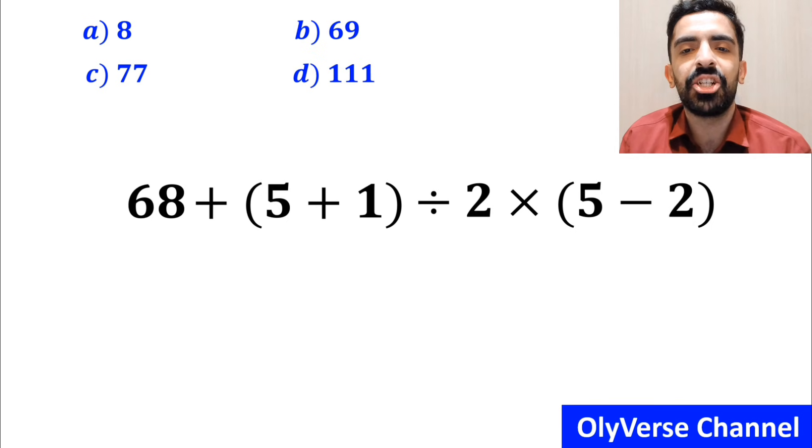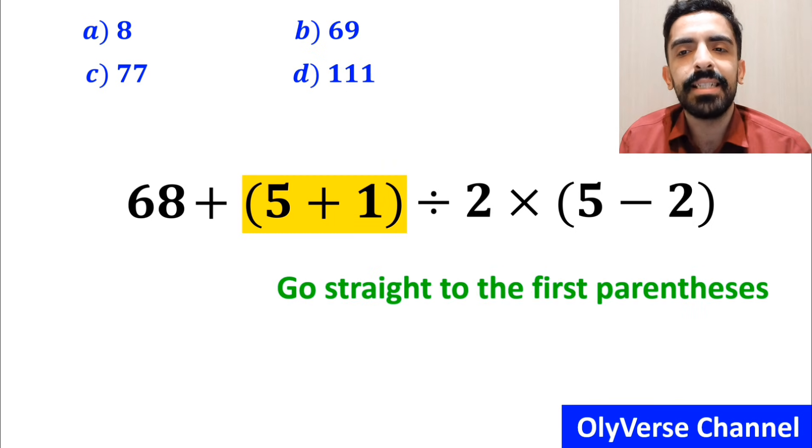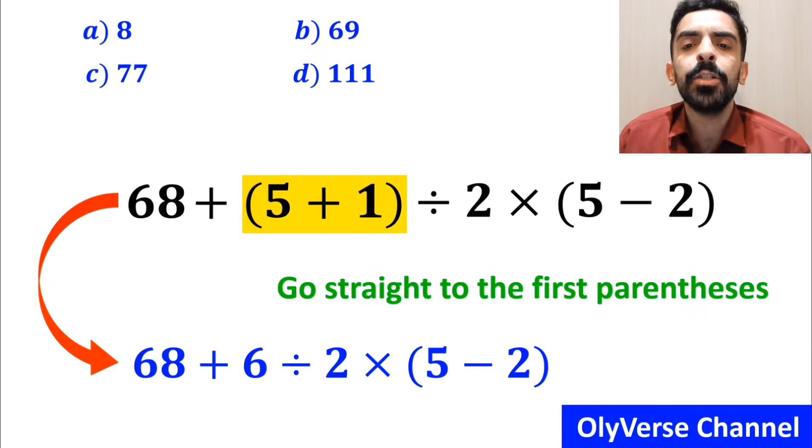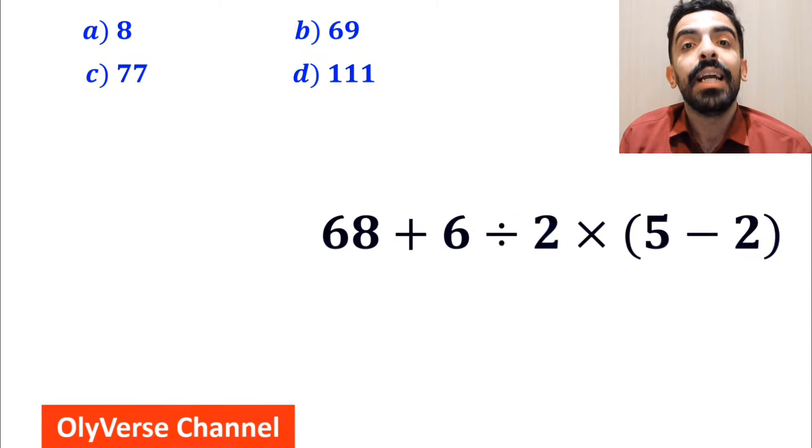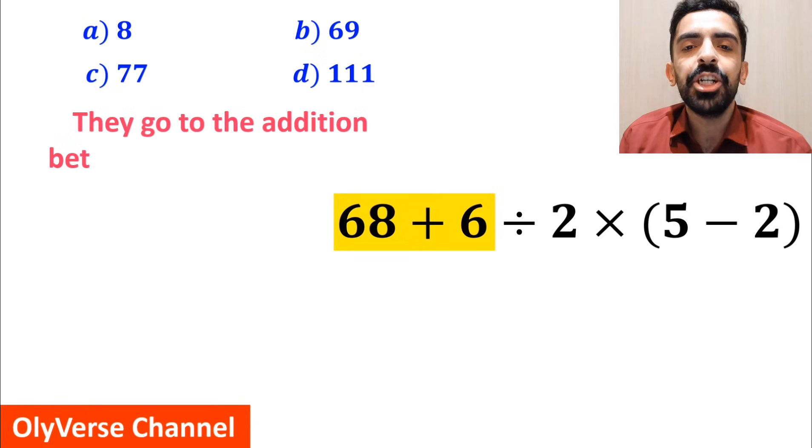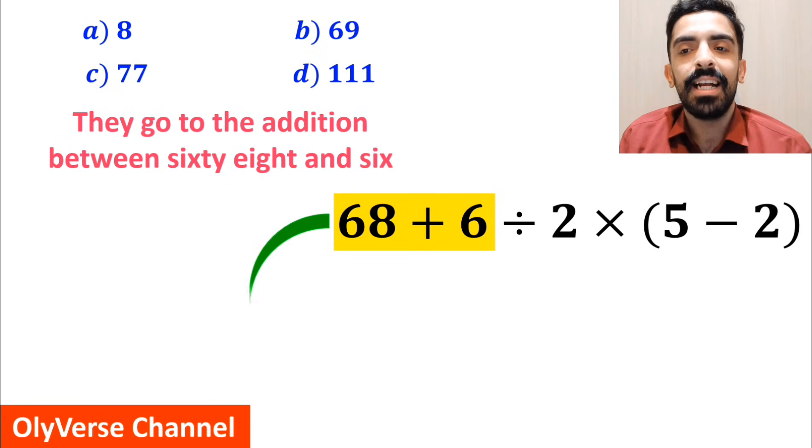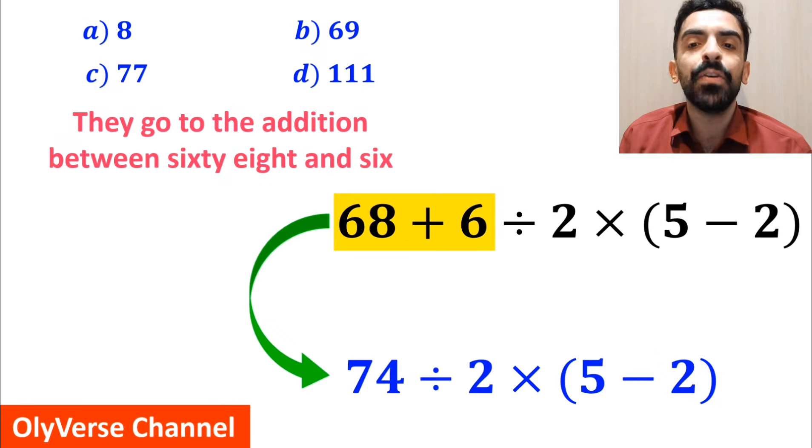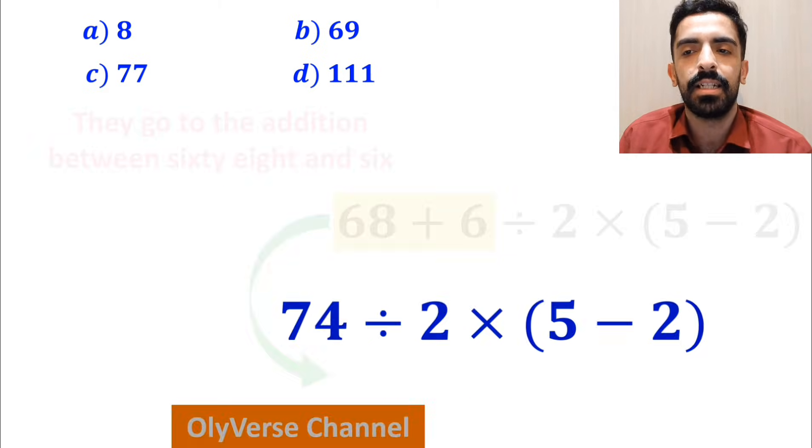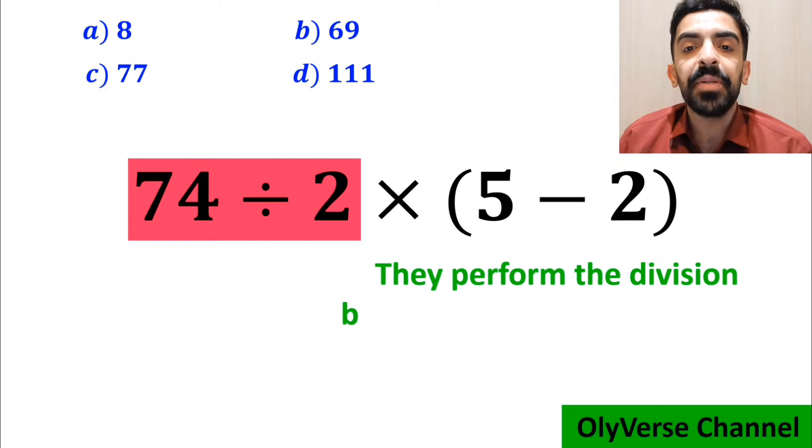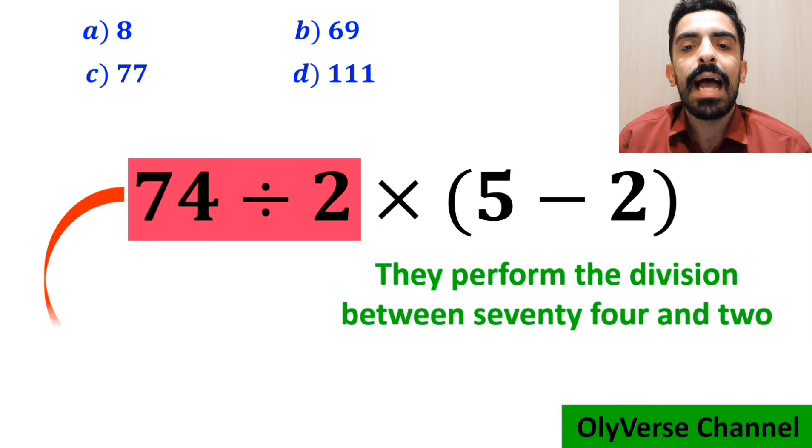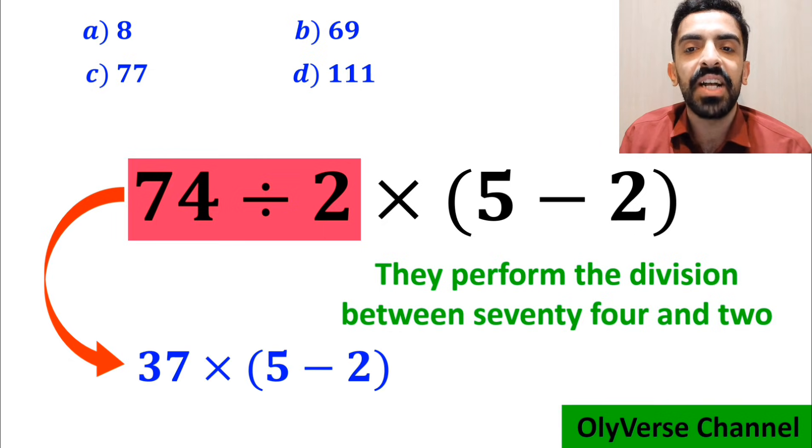Many people when solving this question go straight to the first parenthesis and simplify the expression to 68 + 6 ÷ 2 × (5 - 2). Next, they go to the addition between 68 and 6, simplifying to 74 ÷ 2 × (5 - 2). Then they perform the division between 74 and 2, writing the expression as 37 × (5 - 2).